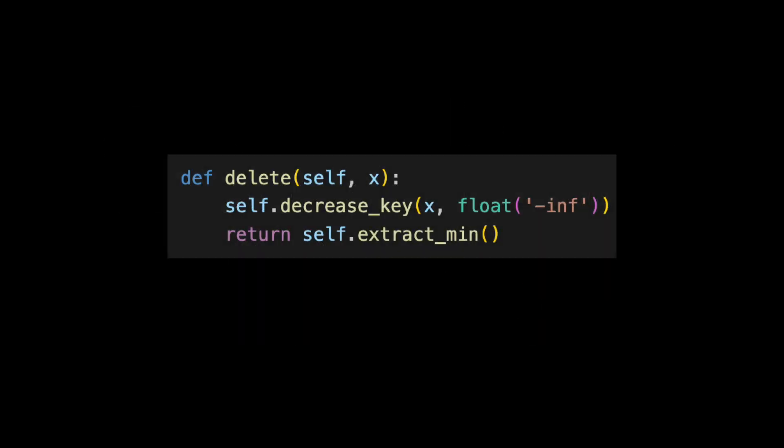We'll start by looking at the delete code, which is super simple. We first decrease the key of the node we want to delete to negative infinity. We then extract the minimum. We are familiar with both of these methods from previous videos.